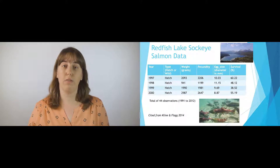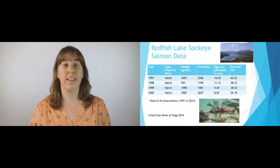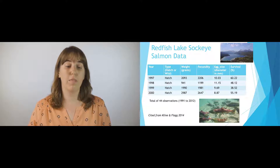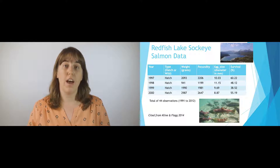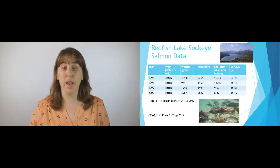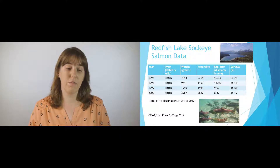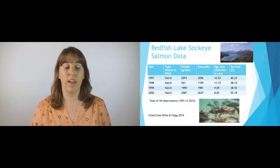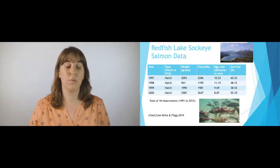The dataset we'll be working through in these modules is from Redfish Lake — a dataset of sockeye salmon. You can see a snippet of the data on the slides. Redfish Lake is in central Idaho. The dataset has six variables: the year the data was collected, whether the salmon were from the hatchery or the wild, their weight in grams, their fecundity (average egg size for females), the average number of eggs for those females, egg size diameter in millimeters, and survival. There are 44 observations from 1991 to 2012.